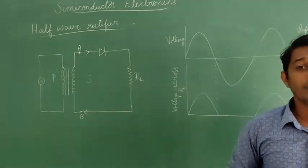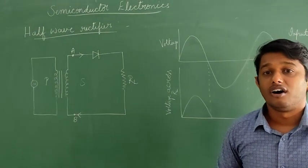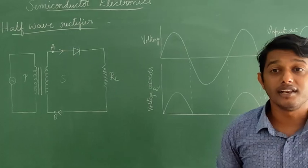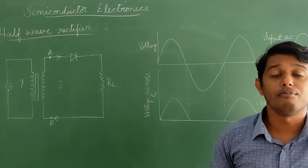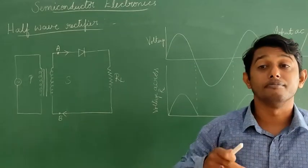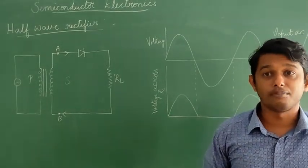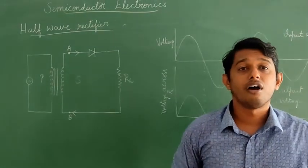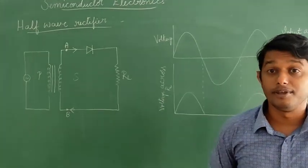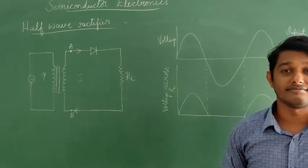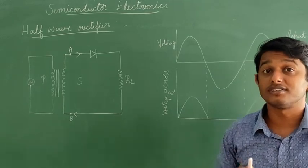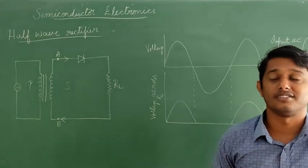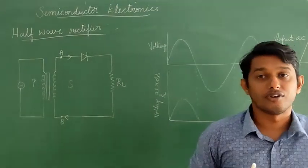During the positive half cycle of AC, point A is at positive potential with respect to point B. Therefore, the diode is forward biased and it conducts current. The output is obtained across the load resistance.